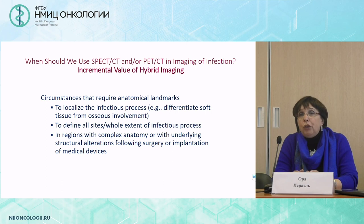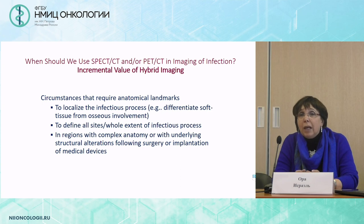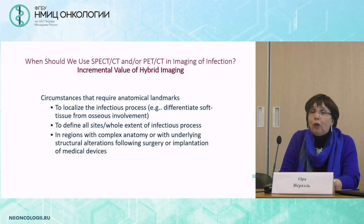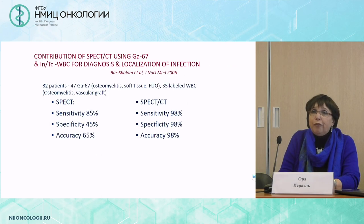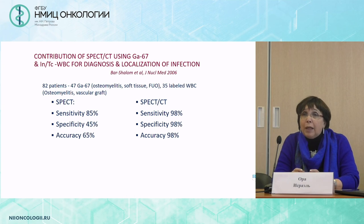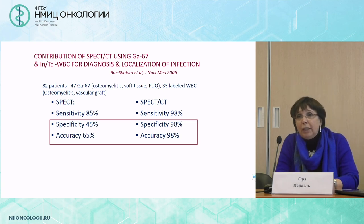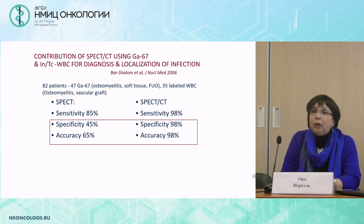When should we use hybrid imaging in imaging of infection? In my opinion, always — but mainly in those cases that require good anatomical landmarks to localize the infectious process, to define the whole extent of disease, and in regions with complex anatomy, sometimes following previous invasive procedures. This may be the first study published by our group using SPECT-CT with both gallium-67 and labeled white blood cells for diagnosis and localization of infection, 13 years ago, including patients with osteomyelitis, soft tissue infection, fever of unknown origin, and vascular graft infection. Moving to SPECT-CT significantly increased the specificity and accuracy, and in more than one quarter of patients, SPECT-CT had an impact on patient care.